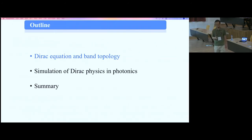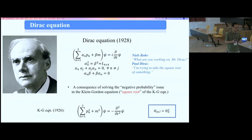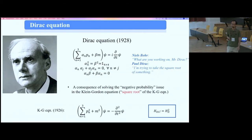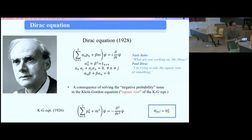The Dirac equation was proposed almost a hundred years ago by Dirac. At that time, many people were trying to combine special relativity with quantum theory. Initially people proposed the Klein-Gordon equation to describe relativistic quantum waves, but there is an issue — first noticed by Schrödinger — that there might be negative probability in the system, because there is a second-order derivative in time.